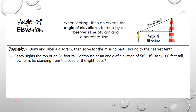In our first example, this person's name is Casey. Casey sights the top of an 84-foot tall lighthouse at an angle of elevation of 58 degrees. If Casey is six feet tall, how far is she standing from the base of the lighthouse?